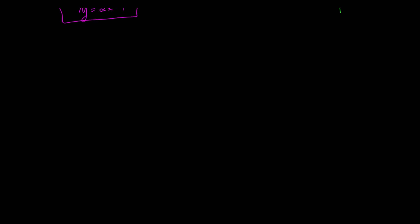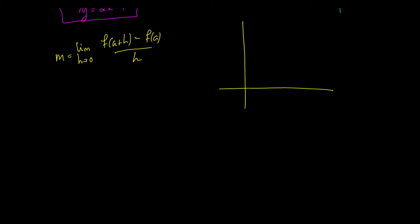I'm going to show you one more formula for the slope of your tangent line. We have m = the limit as h goes to 0 of f(a+h) minus f(a) over h. Graphically, we have a point a, then we add h to get to a+h, and we move that point closer and closer to a so h becomes 0. This is the same limit — a secant line pushed forward until it becomes a tangent line. It makes the algebra easier in some cases.